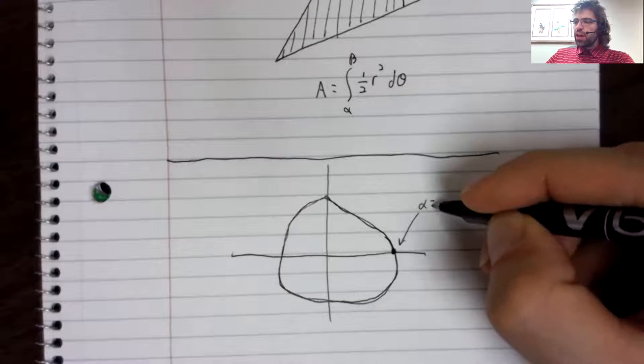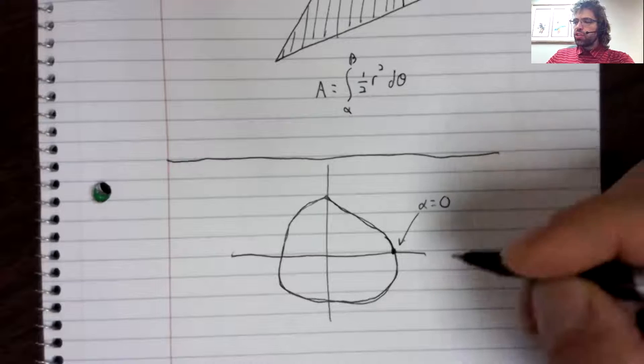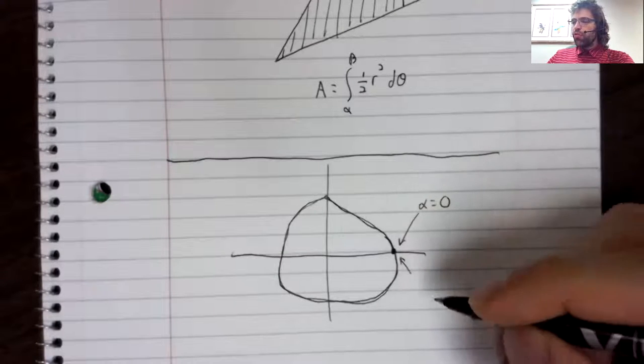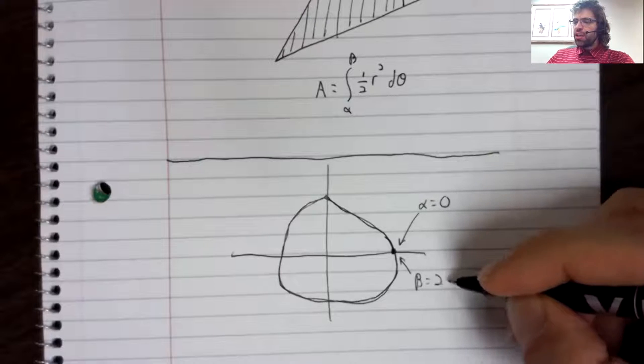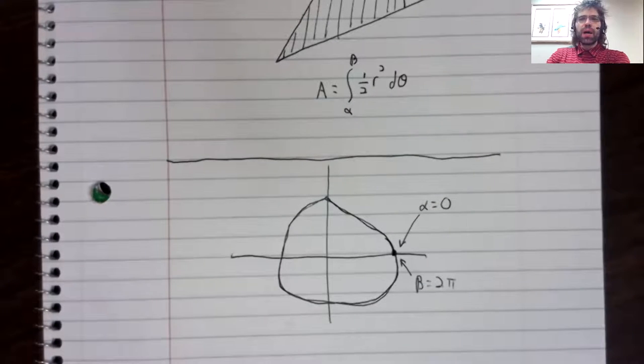So to find the area of a region like this, you'd let alpha be zero, beta be two pi.